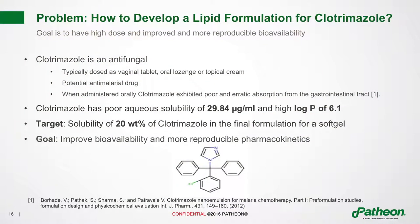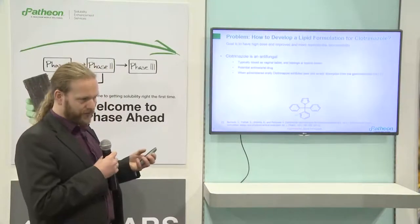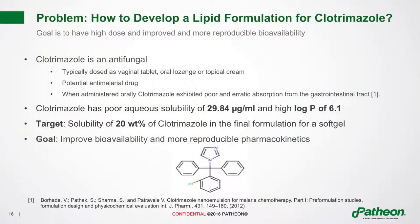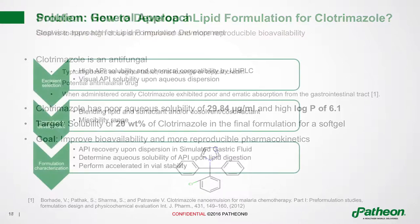We use the model compound Clotrimazole. The goal was to achieve a high dose with improved and more reproducible bioavailability. Clotrimazole is an antifungal typically dosed as a vaginal tablet, oral lozenge, or topical cream. However it can also be used as a potential anti-malarial drug if administered orally, but doing so gives poor and erratic absorption from the gastrointestinal tract — with a lot of variability from one patient to the next and even within the same patient. The solubility in water is very low, the log P is around 6, making it a suitable candidate for lipid formulation development. We aimed for a target of 20 weight percent in the formulation, which would make it suitable for a soft gel formulation.